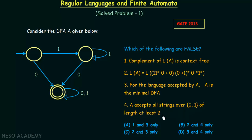We have options A, B, C, and D. Option A says statements 1 and 3 only are false. Option B says 2 and 4 only are false. Option C says only 2 and 3 are false. Option D says only 3 and 4 are false. In order to find the answer, we need to determine whether statements 1, 2, 3, and 4 are each true or false.